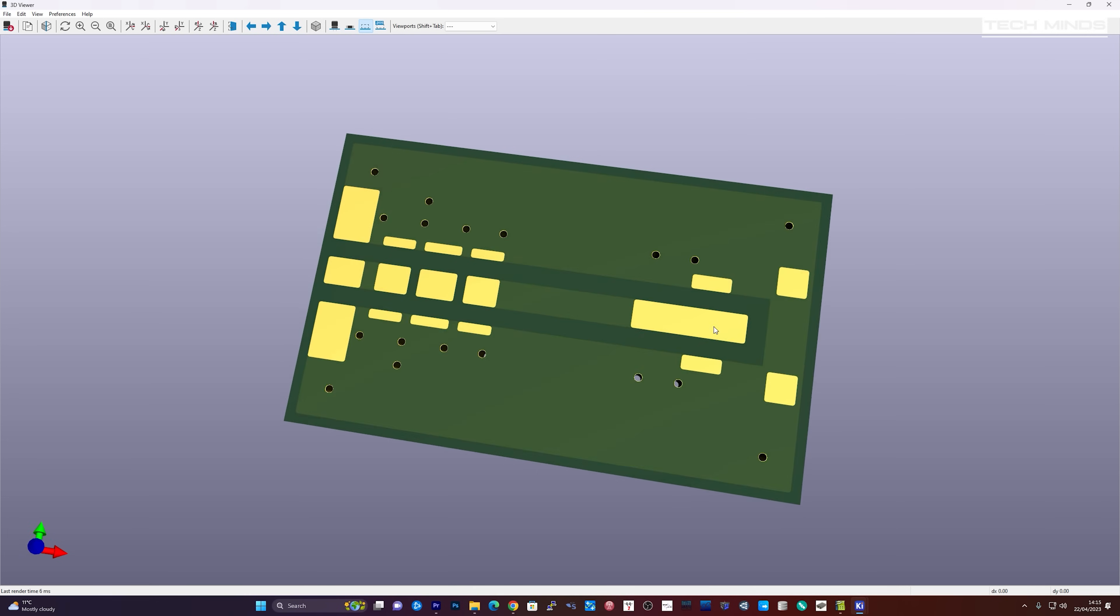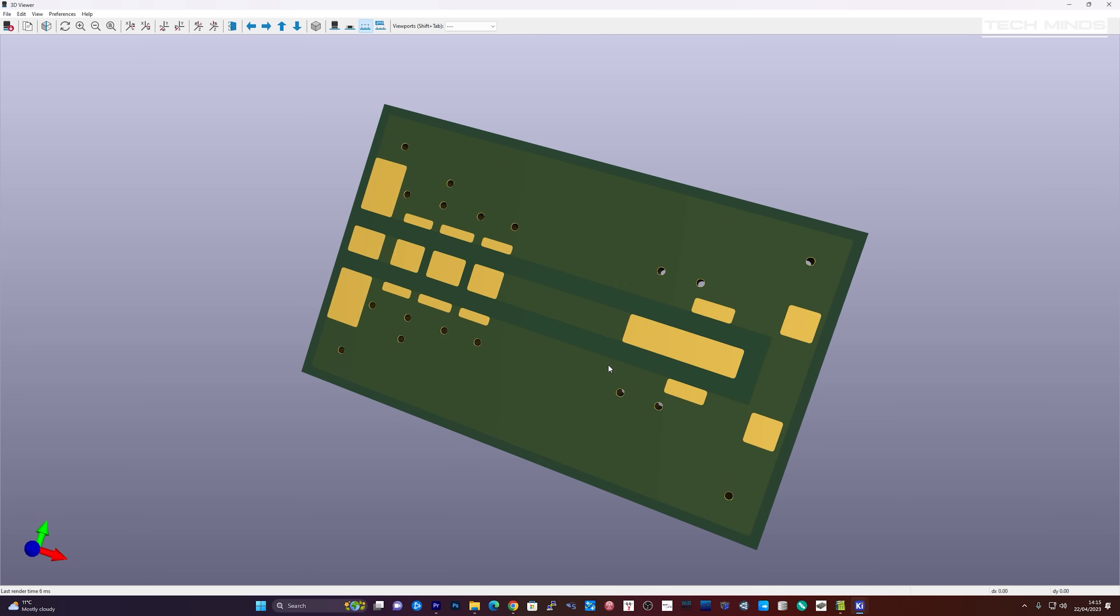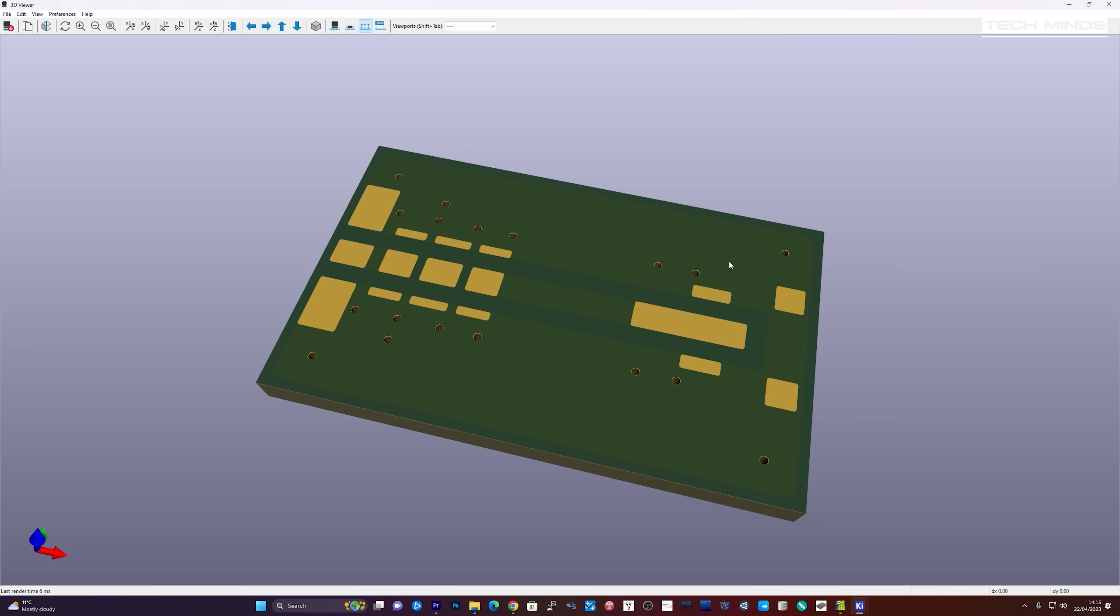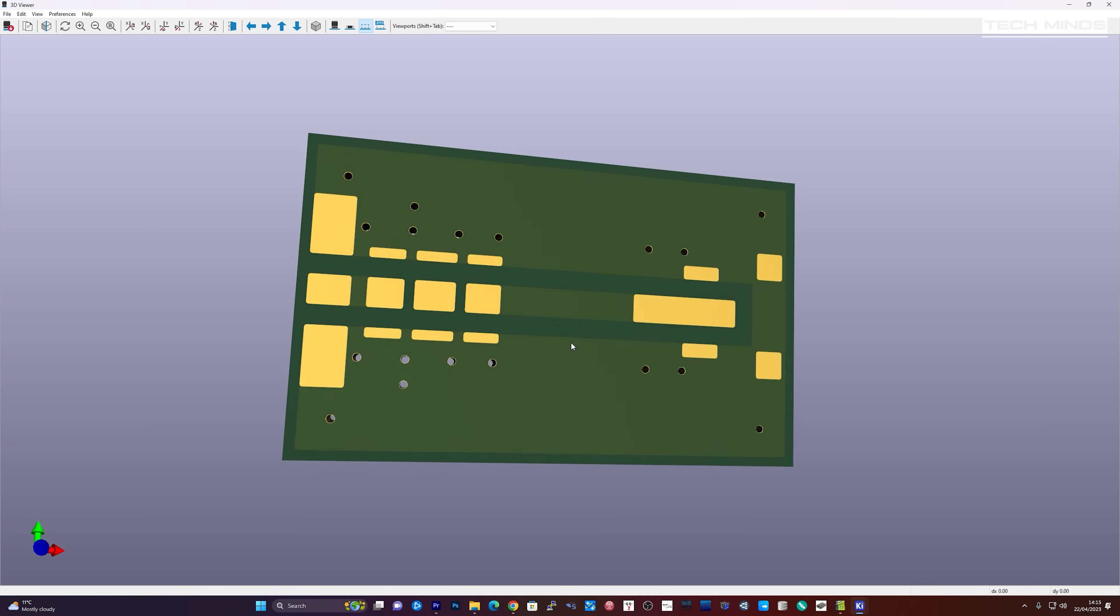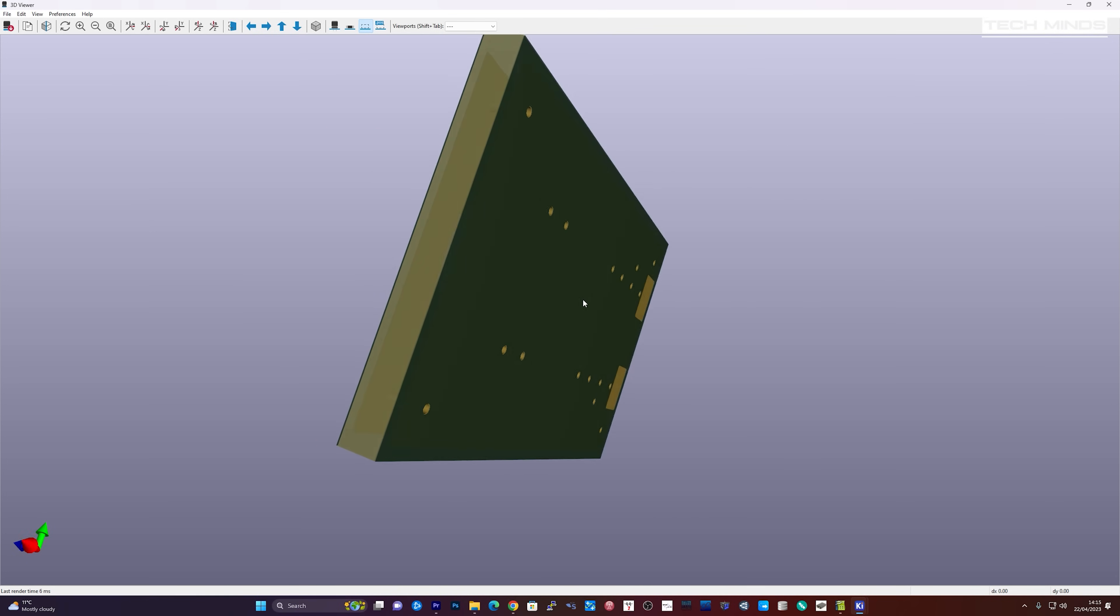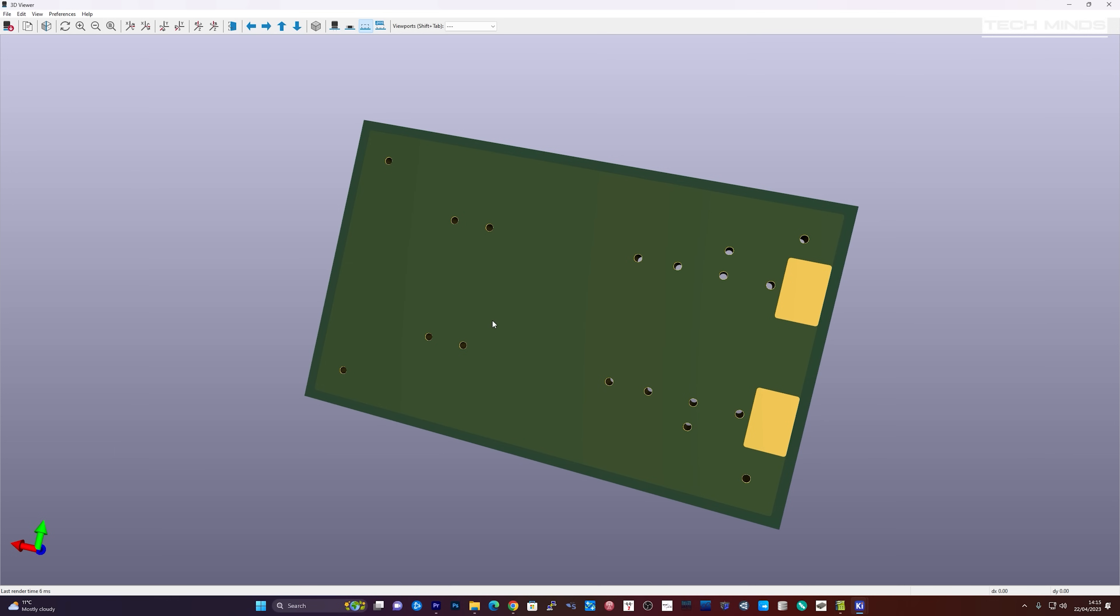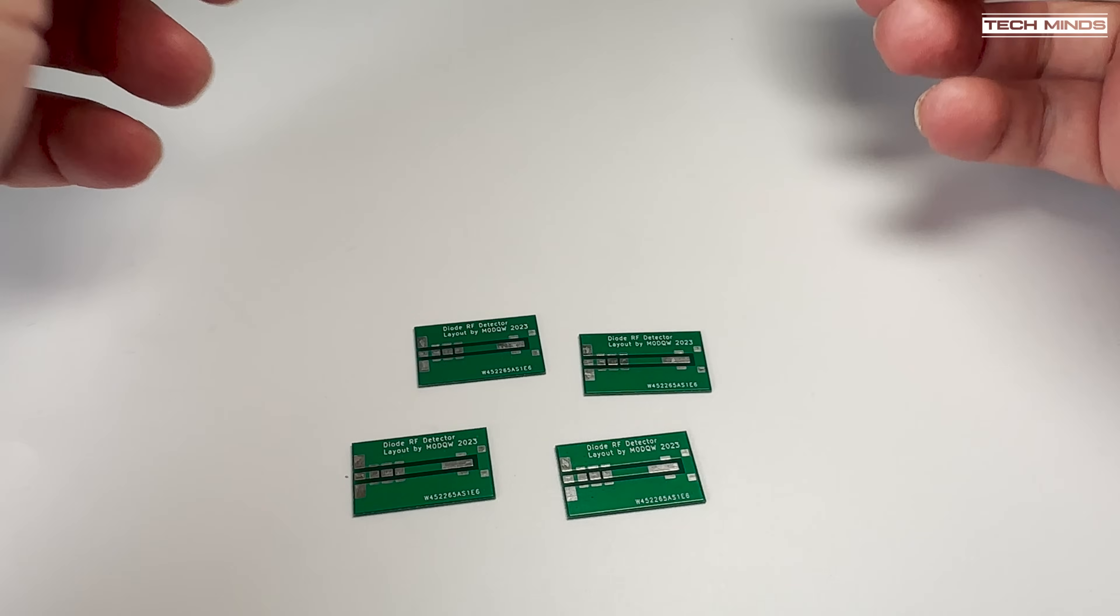So after designing the board in KiCad and viewing the lovely 3D model and feeling a sense of achievement, it was time to send these designs off to a PCB manufacturer. Now I've used PCB Way before, but of course you can choose whoever you want. I think it cost me around five dollars for five boards plus the postage.